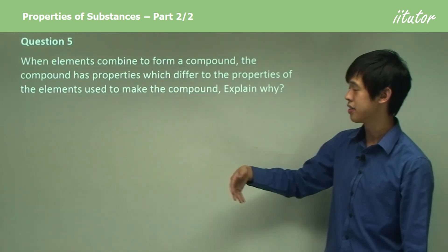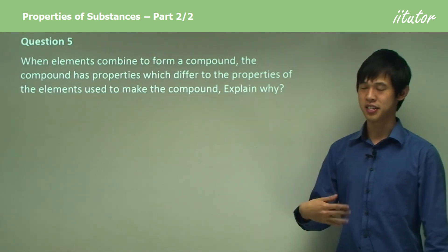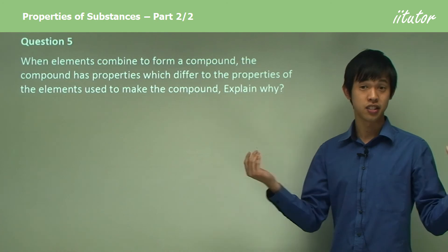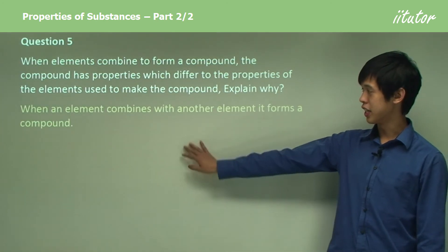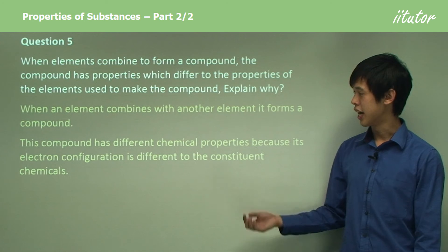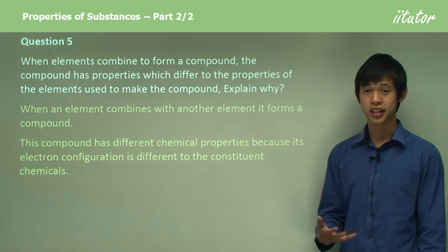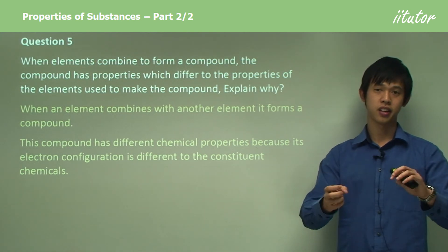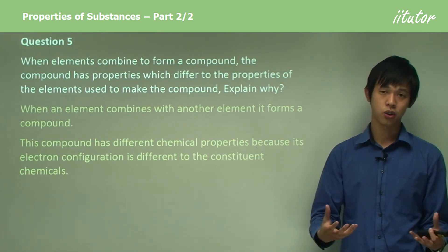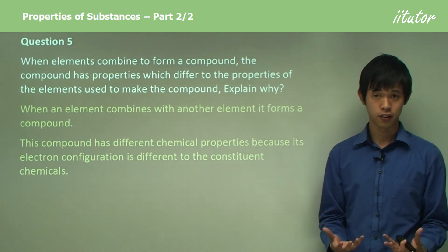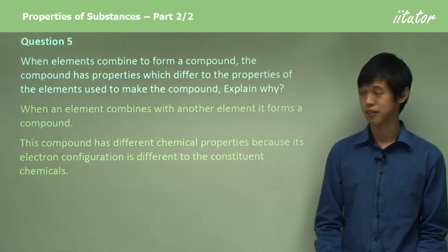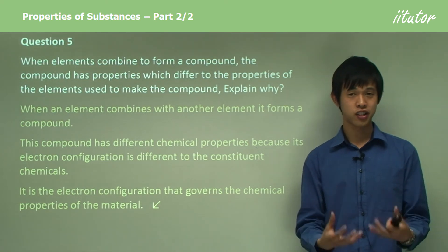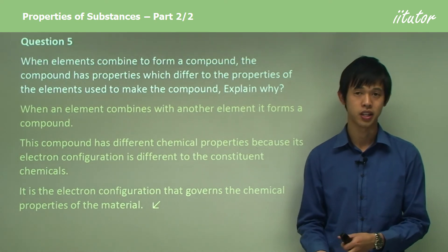When elements combine to form a compound, the compound has properties which differ from the properties of the elements used to make it. This is because when elements bond together, the electron configuration of the resulting compound is different from the constituent elements. Since it is the electron configuration that governs chemical properties, changing that configuration through bonding means the compound will have different chemical properties from its constituents.